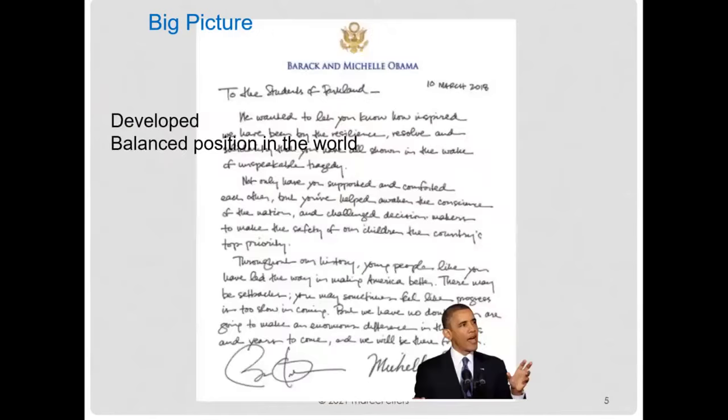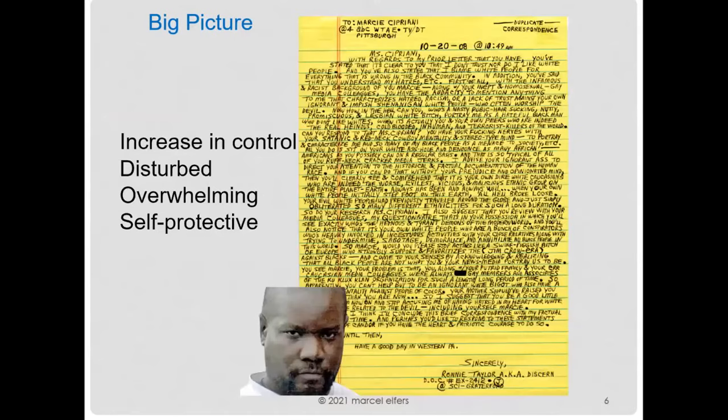The big picture is determining the overall mental health of an individual. Barack Obama's writing shows good balance between the writing and the paper as far as placement is concerned, and the amount of white space versus ink. When you compare that to Ronald Taylor, who wrote two sentences in one line and ignored the left margin guideline — that suggests somebody who leaves no room for others.